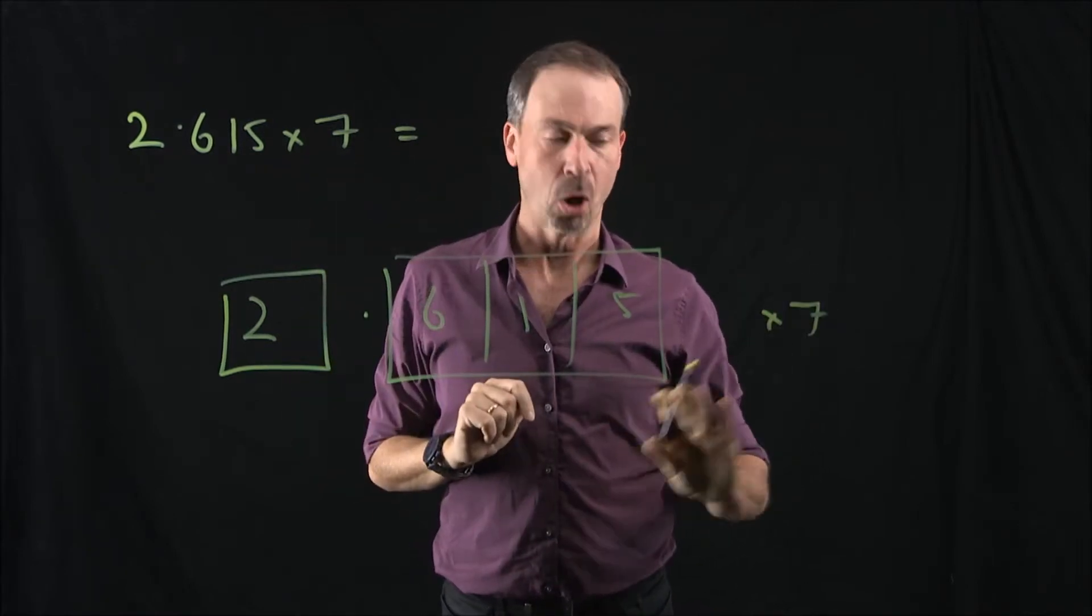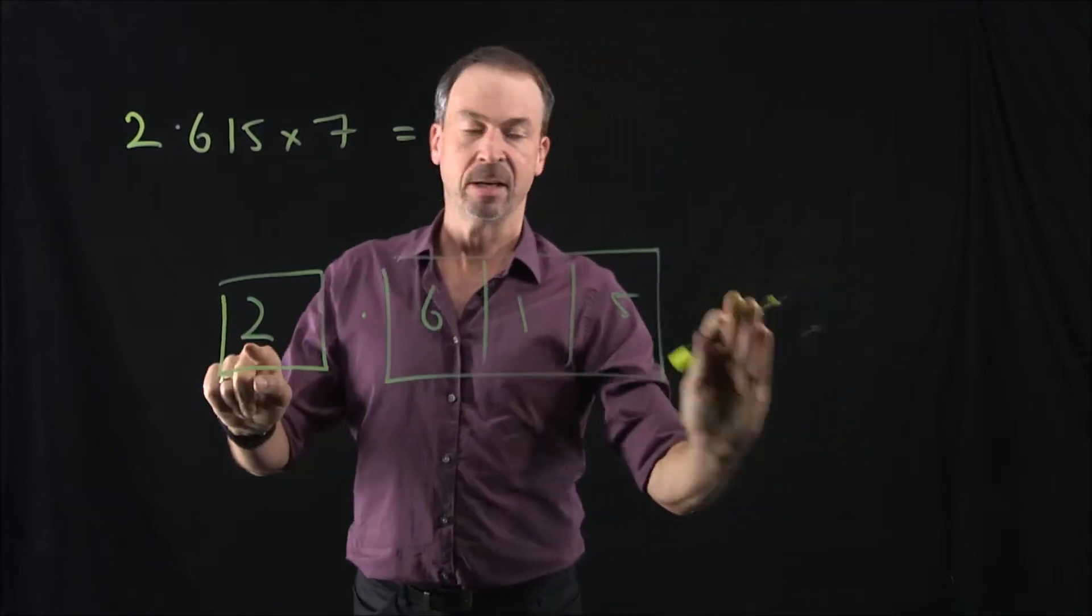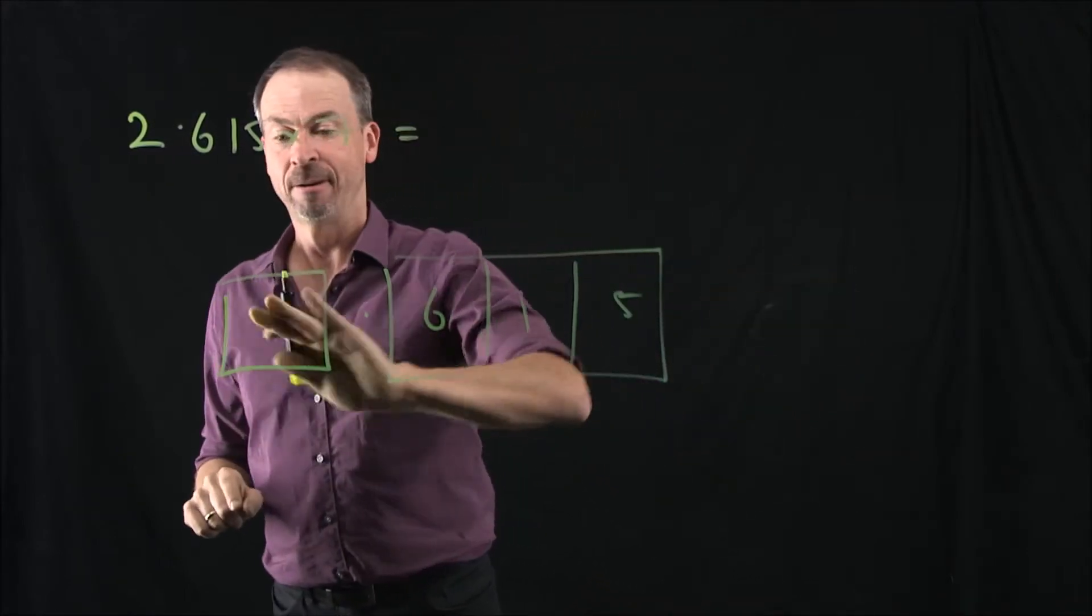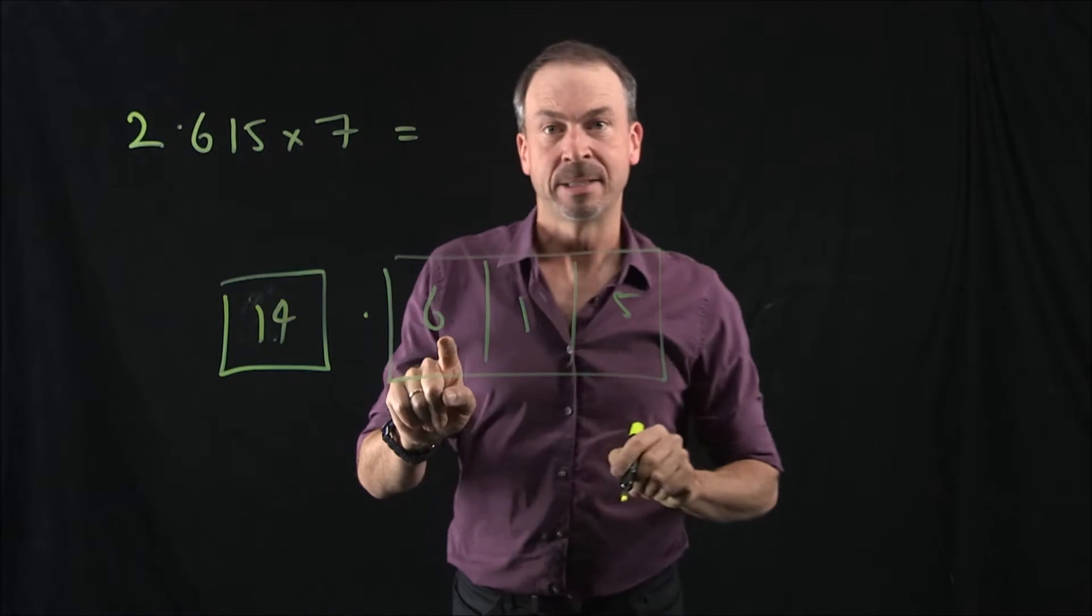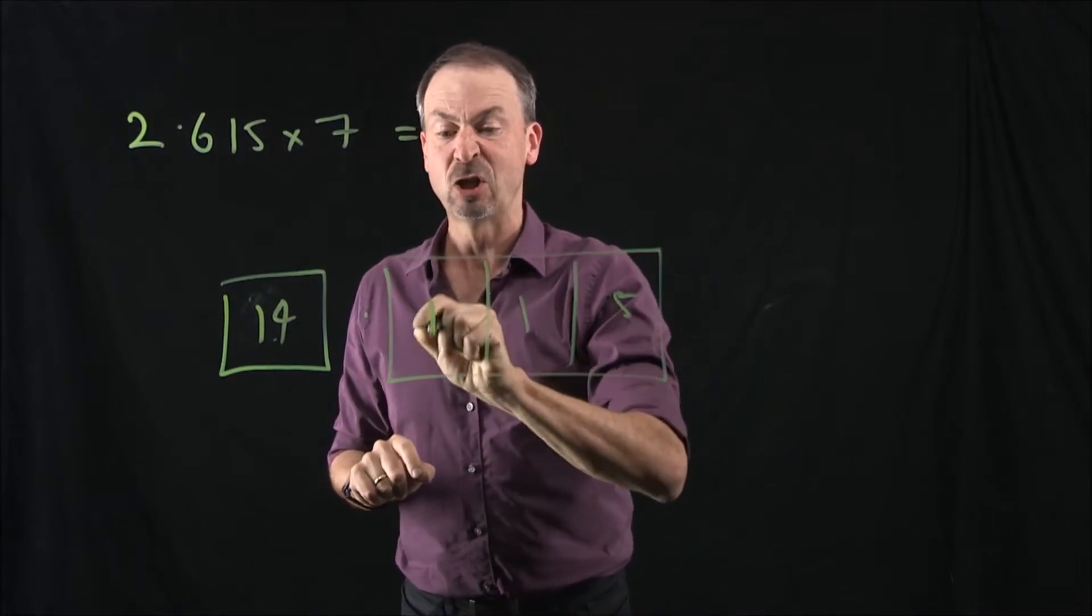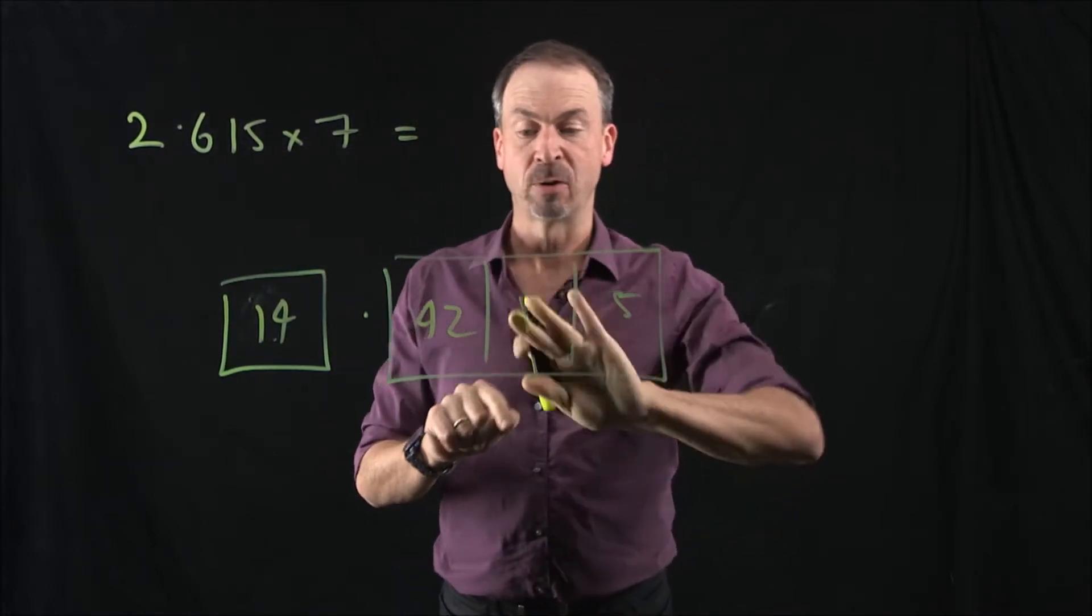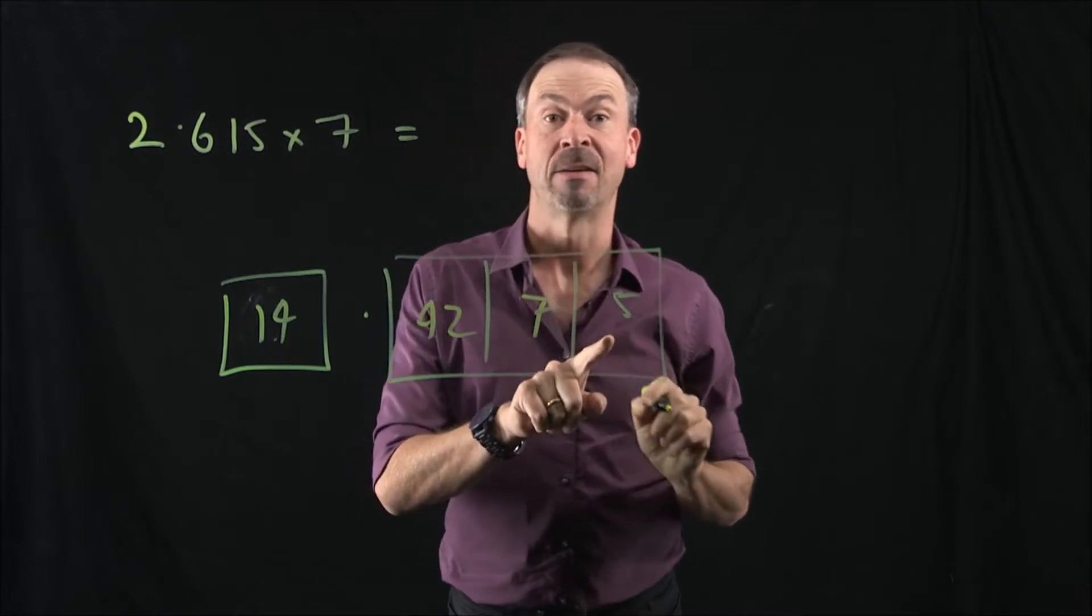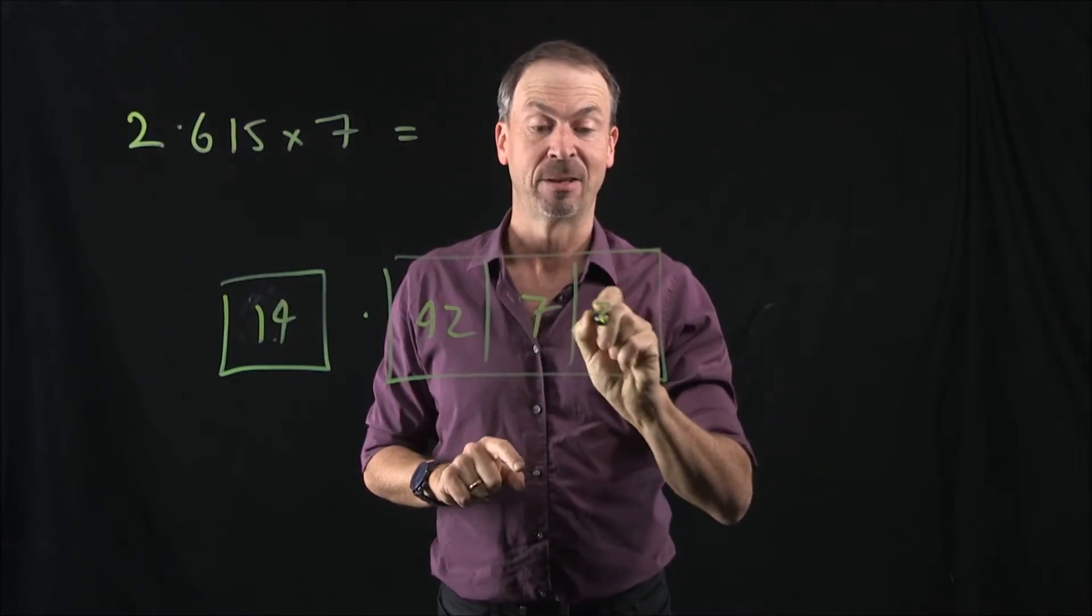And I say, multiply everything by 7. Okay, I can do that. So instead of having 2 ones, I'll now have 14 of them. Instead of having 6 tenths, I'll now have 42 of them. Instead of having 1 one hundredth, I'll now have 7 of them. And instead of having 5 thousandths, I'll now have 35 of them.